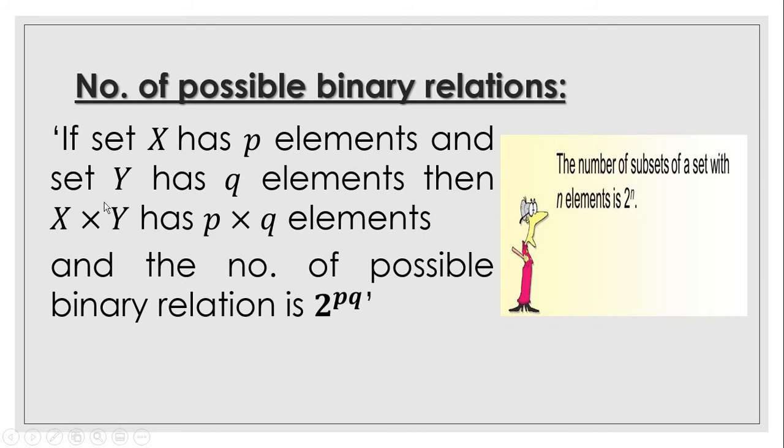...of the Cartesian product set, the number of possible binary relations is 2 raised to power p multiply by q, that is 2 raised to power the number of total elements in the Cartesian product set.